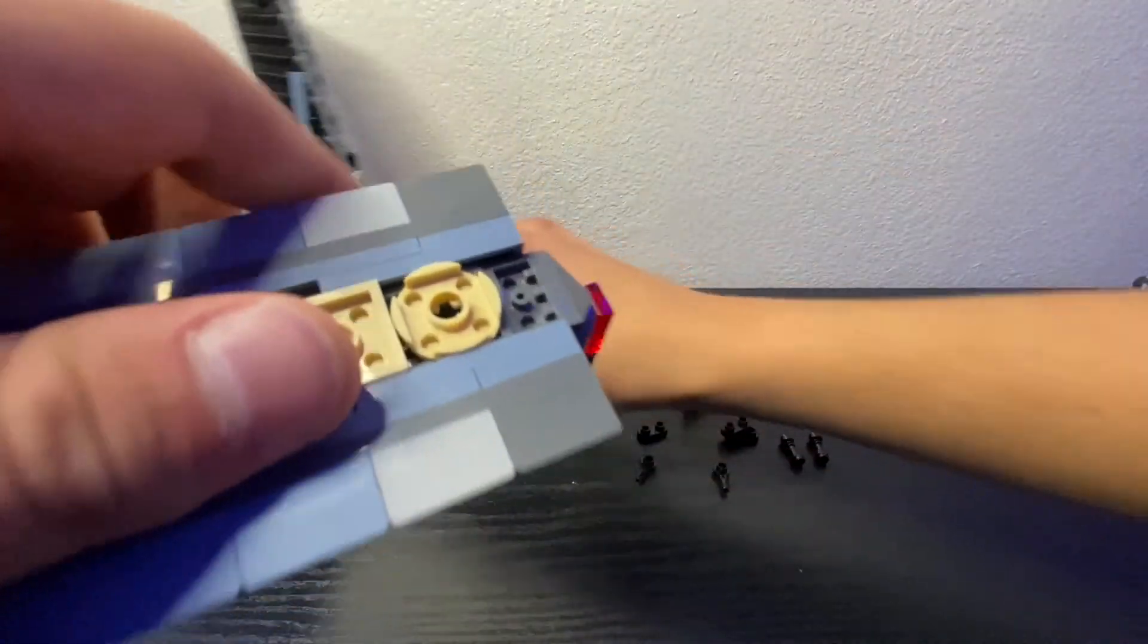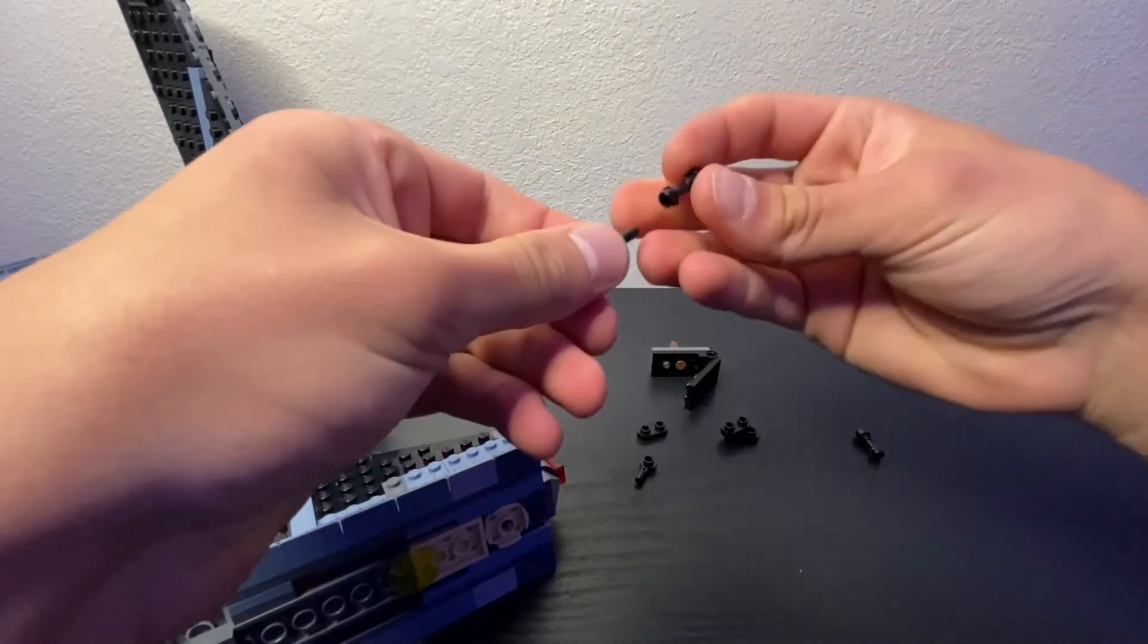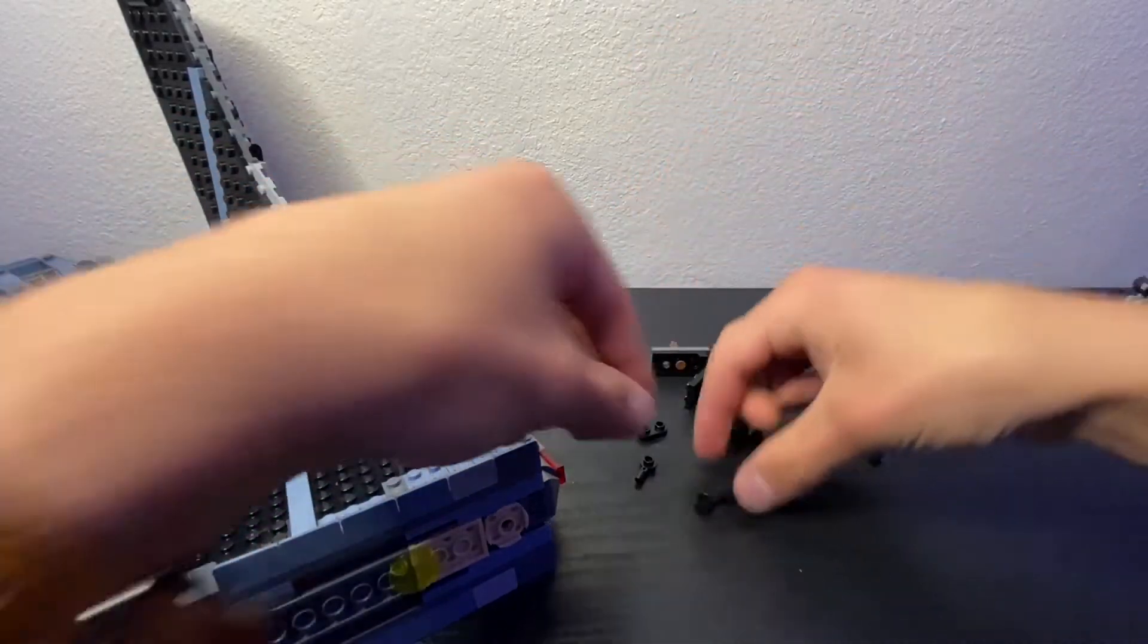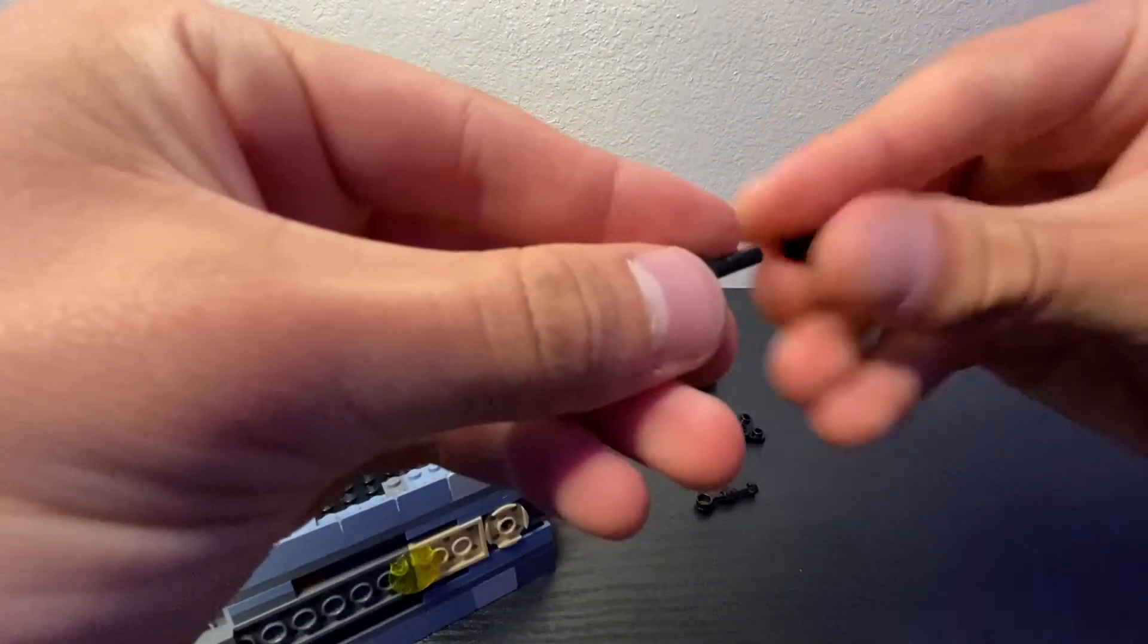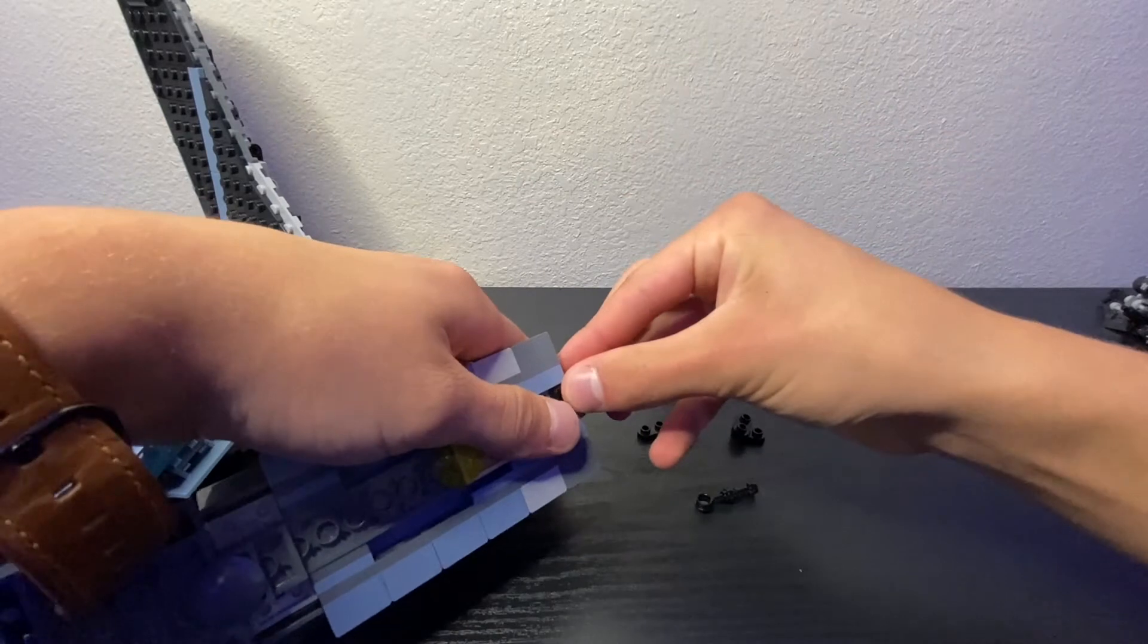So now that we got that out of the way, we're going to take our top here. I'm just going to move that off to the side. And then we're going to take these pieces right here and attach them to our lightsaber hilts. Just like so.